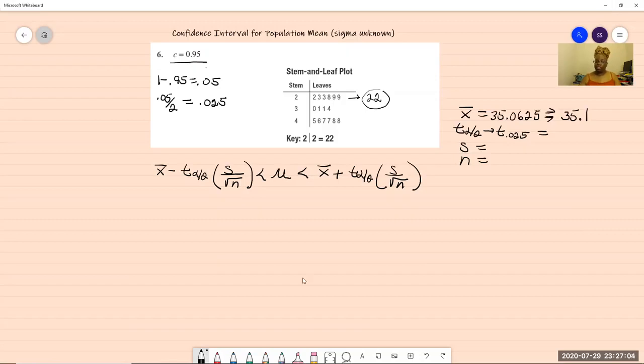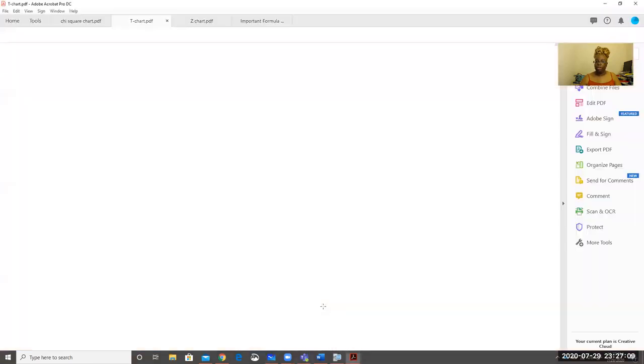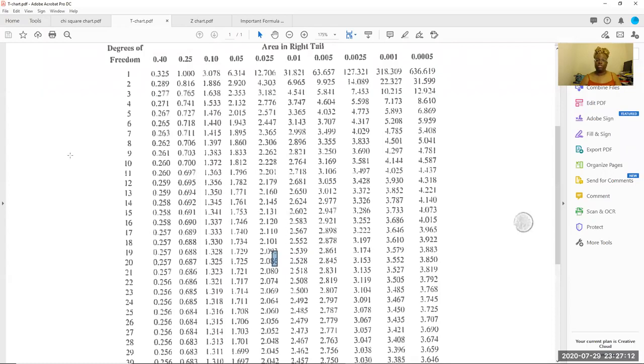And what is that equal to? Well, what do we need? We need a T chart. Yes, we're using the charts here. So we need a T chart. So let me find us a T chart. Here's a T chart. What do we need for a T chart? Well, for a T chart, we need degrees of freedom.